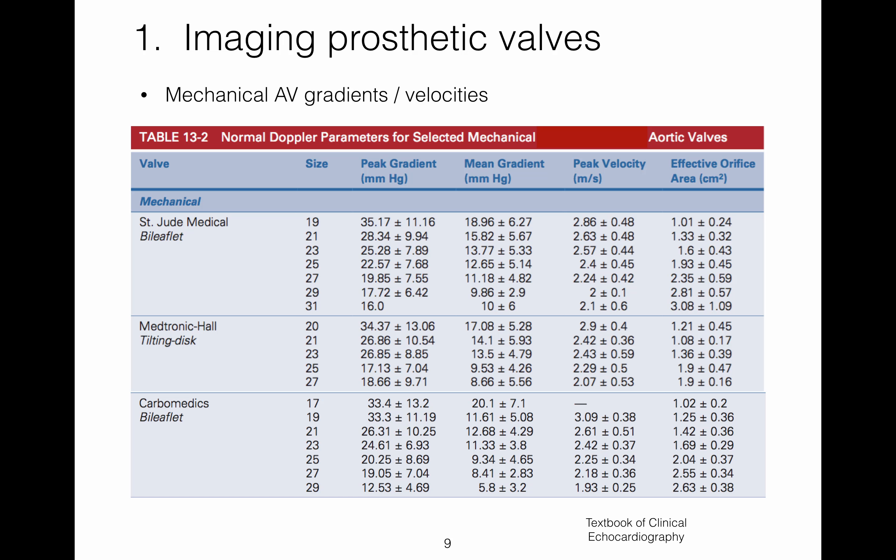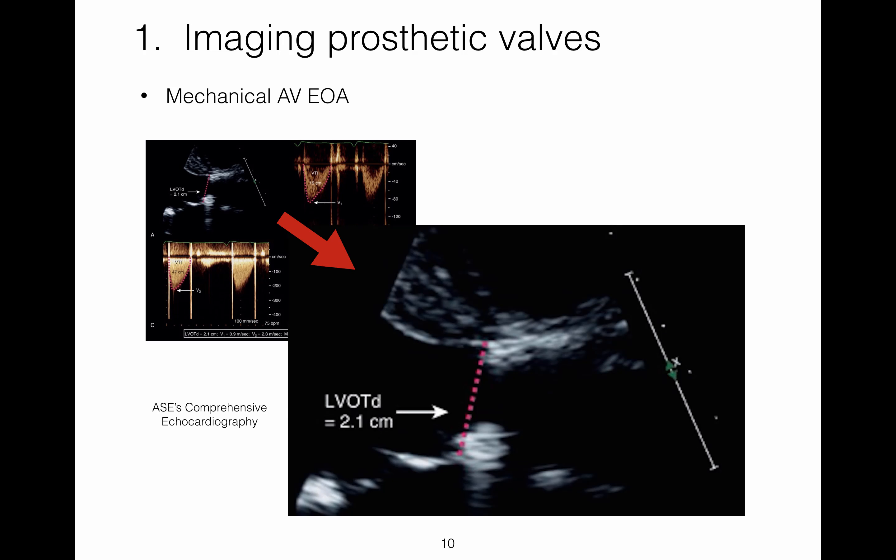Published normal values for mechanical aortic valves are displayed on this slide and available in Catherine Otto's textbook. Notice that the highest peak and mean gradients are in the smaller valves. Measurement of the effective orifice area using the continuity equation is made in the same way as measuring the aortic valve area for a native valve. For prosthetic valves, care should be taken to measure the LVOT diameter just underneath the prosthesis to the outer margins of the sewing ring.